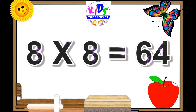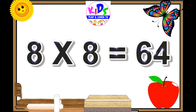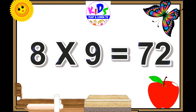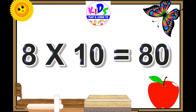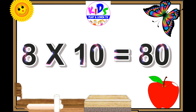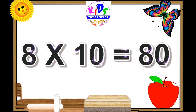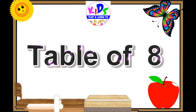Eight sevens are fifty-six. Eight eights are sixty-four. Eight nines are seventy-two. Eight tens are eighty.